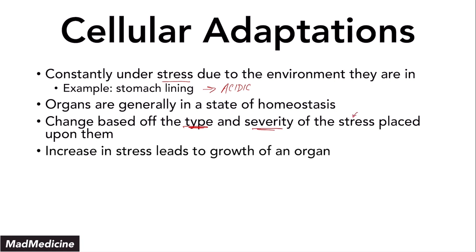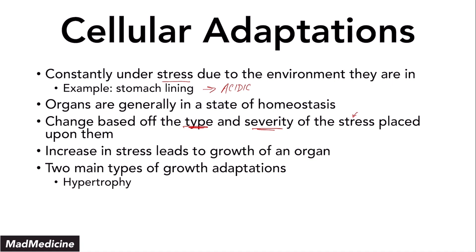Cells will eventually grow when they're under a lot of stress, and there are two types of growth adaptations: hypertrophy and hyperplasia, both of which we discussed in our previous video. Once an organ grows because of the stress placed upon it, when you take away that stress, you need to reverse that growth — we can't be walking around with hypertrophic and hyperplastic organs. So there is a mechanism built into our body to prevent that.